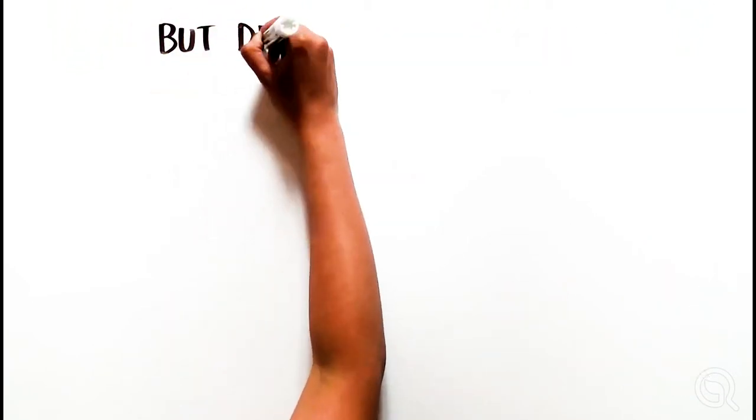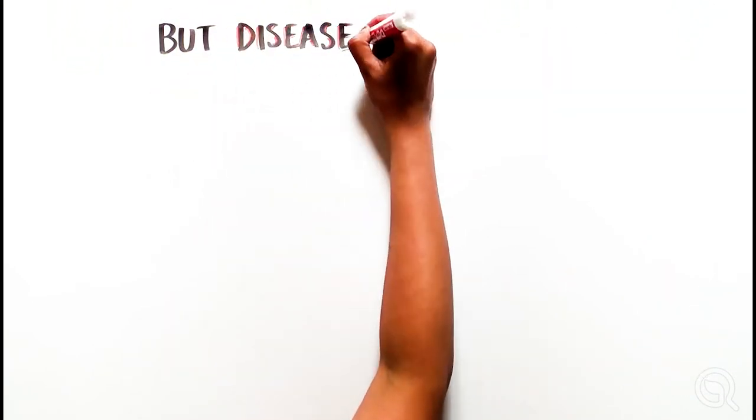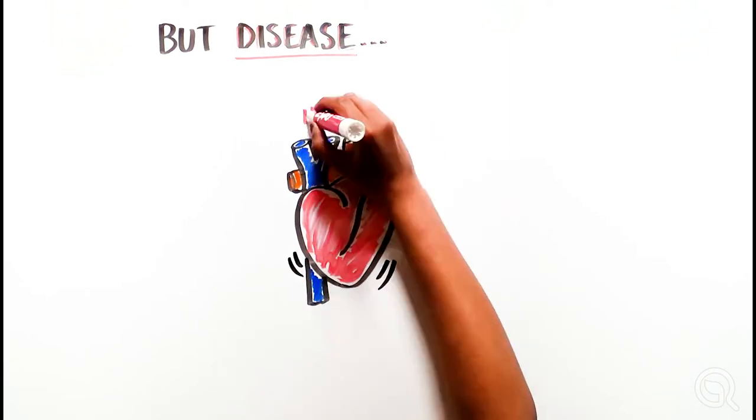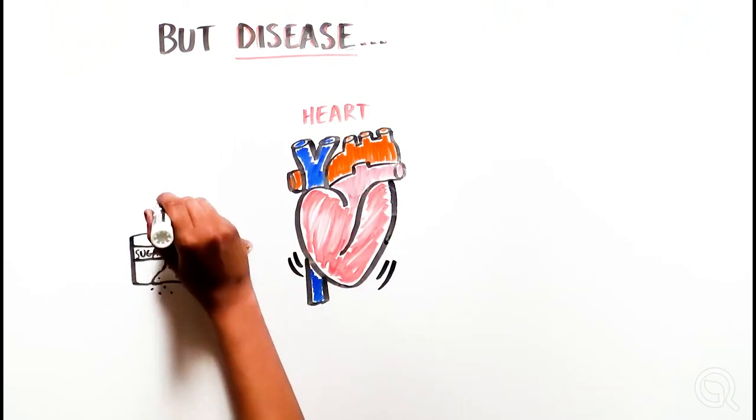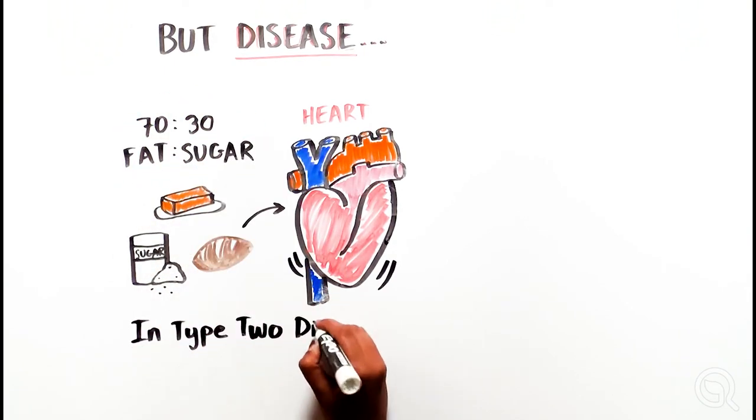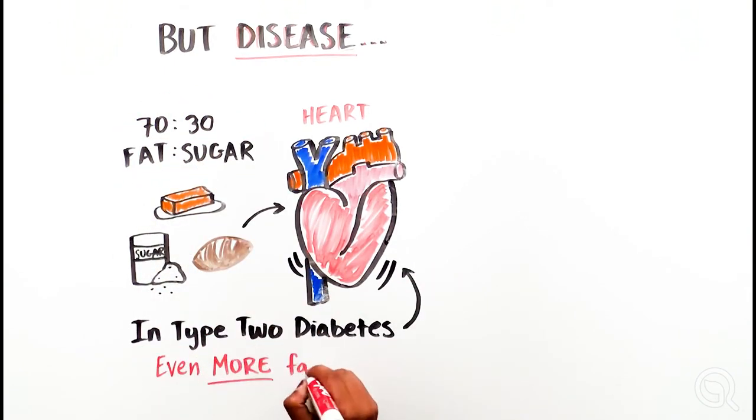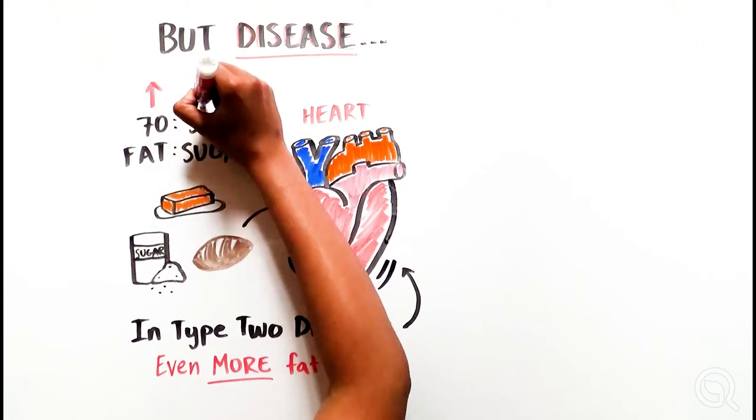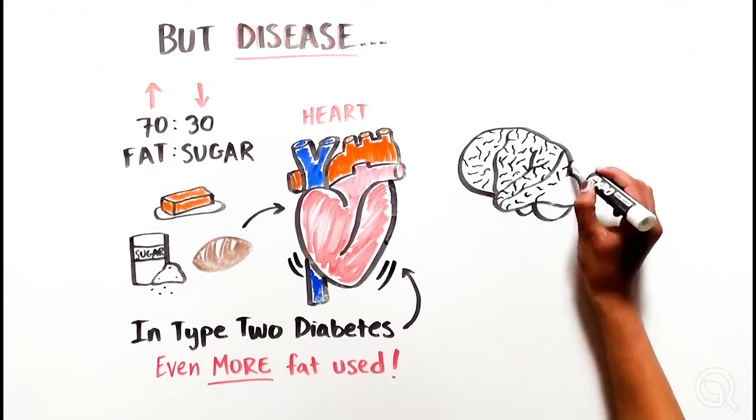When things go wrong, metabolism can be a key factor in disease. For example, the healthy heart uses fats and sugars in a 70 to 30 ratio. But in type 2 diabetes, the amount of fat it uses increases even further, as it responds to the higher levels of circulating fat in the bloodstream.